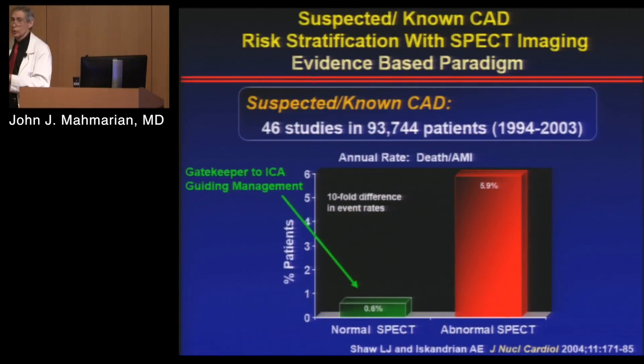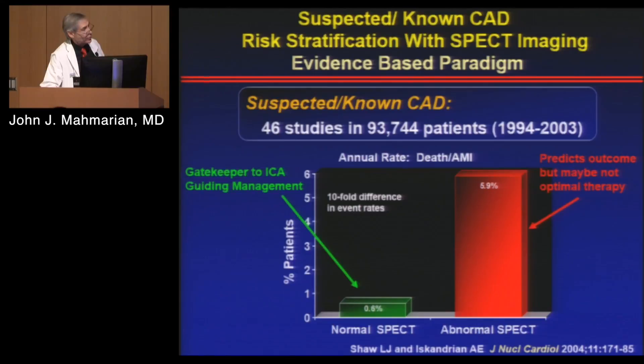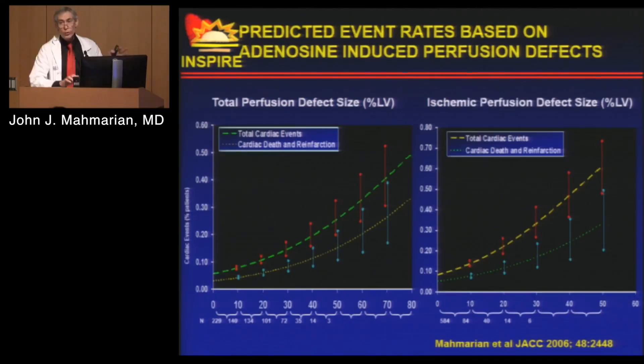From a prognostic point of view, nuclear imaging is truly a gatekeeper to the cath lab. In patients with a normal myocardial perfusion scan, the death and MI rate is around 0.6% per year — a very low risk individual. Conversely, if they have an abnormal scan, there's a tenfold difference in event rates. The normalcy or abnormalcy of the scan predicts outcome based on the perfusion abnormality.